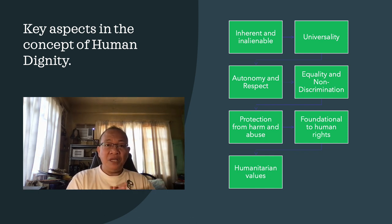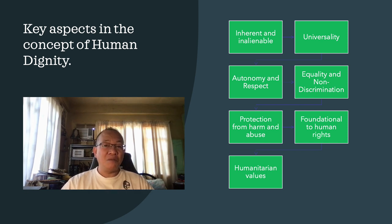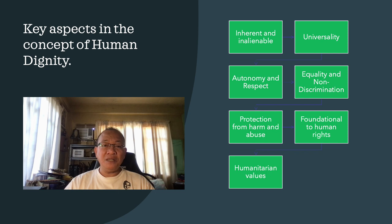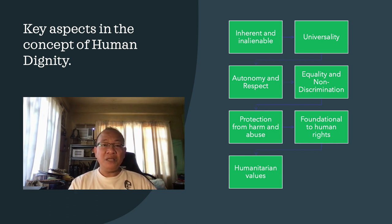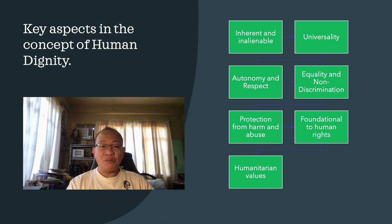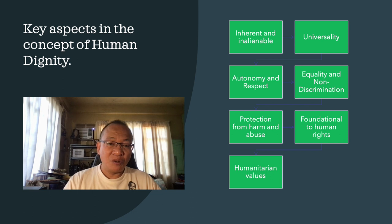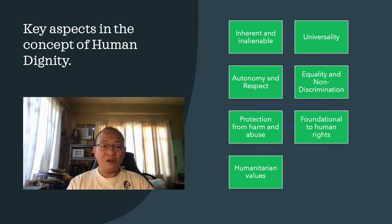Number seven, we have humanitarian values. Human dignity reflects fundamental humanitarian values such as compassion, empathy, and solidarity. It calls for a collective commitment to upholding the dignity and rights of all individuals, particularly those who are marginalized, vulnerable, and oppressed. In summary, human dignity is a core principle of human rights that affirms the inherent worth, autonomy, and equality of every individual. It provides the moral and philosophical foundation for the protection and promotion of human rights, guiding efforts to create a more just, equitable, and humane world for all people.